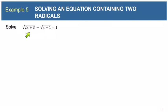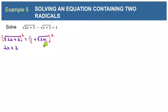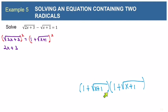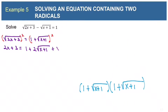Here is our first example where we have two radicals. To solve this one, we're going to have to isolate a radical and square both sides twice — once to remove each radical. First, let's isolate the positive radical and square both sides. Squaring the left side removes the radical, but squaring the right side requires the FOIL method and we'll still have a radical in the expression. First times first is 1, outer and inner are both 1 times the square root of x plus 1, so together they make 2 square roots of x plus 1. Last times last gives us x plus 1, removing that radical.